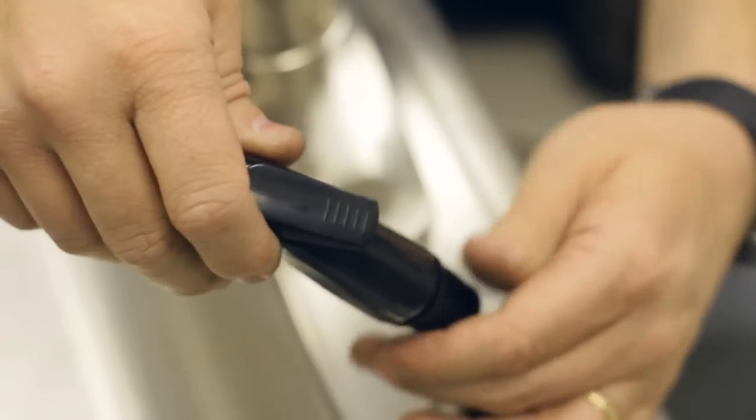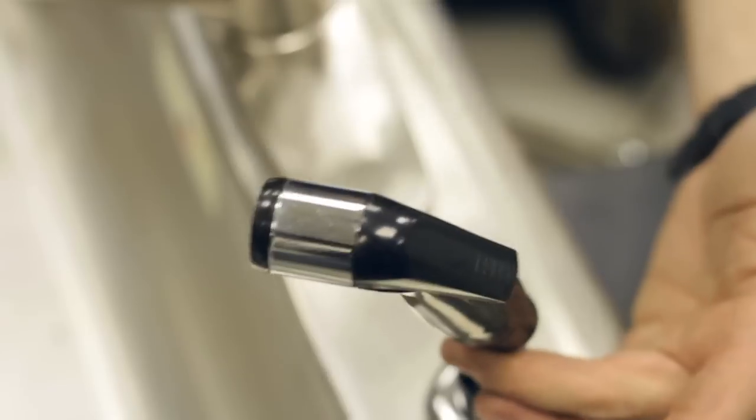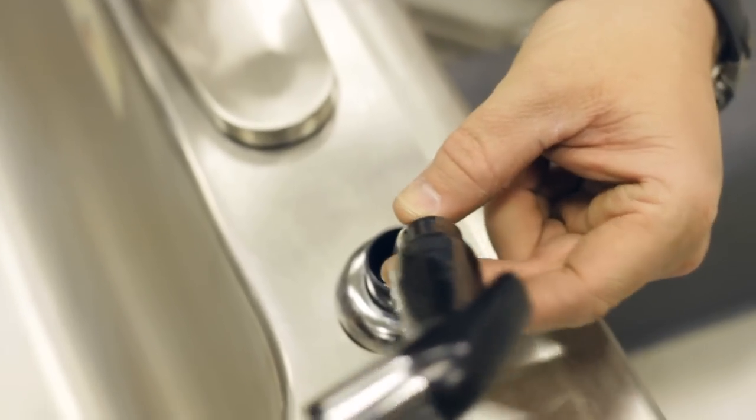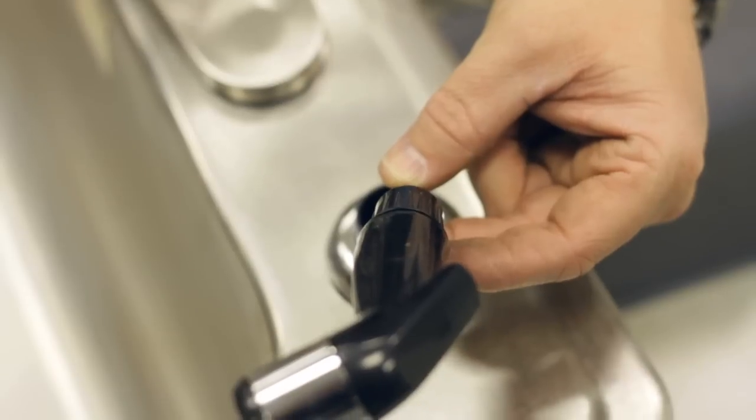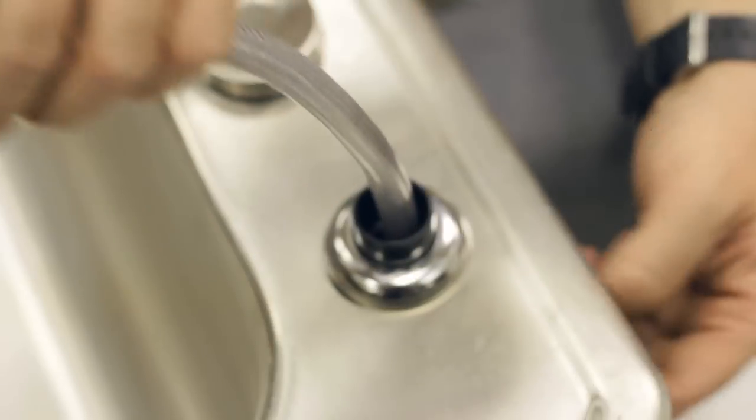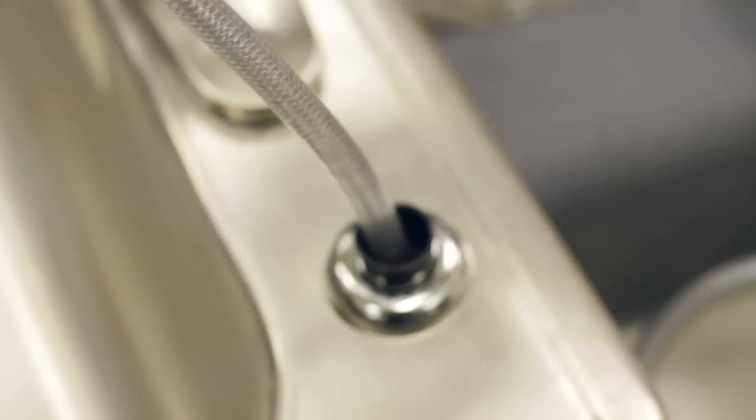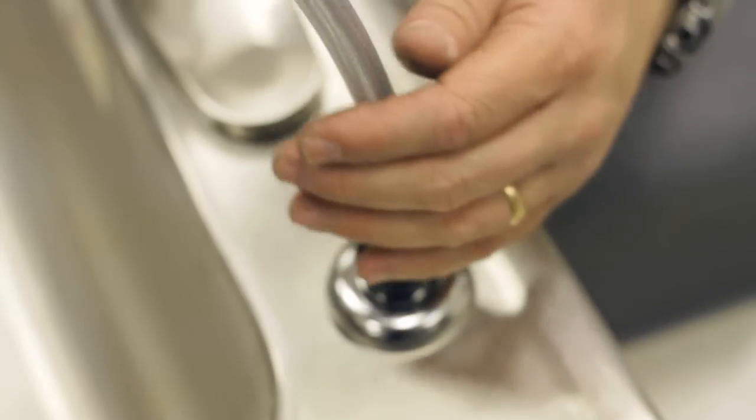Now the other way to replace it would be to replace the hose, which entails working from underneath the sink. It disconnects from the bottom of the faucet, and the whole thing will pull out from the top side, and you can replace the hose and head all together.